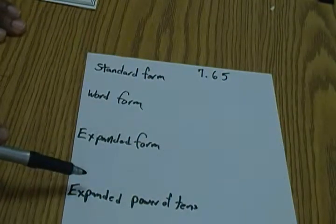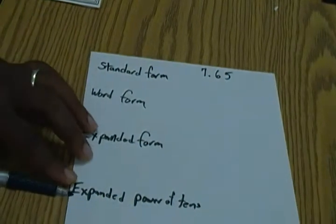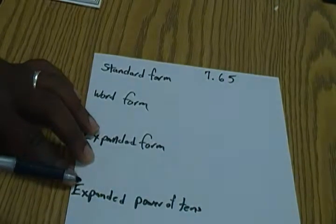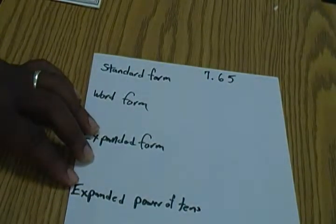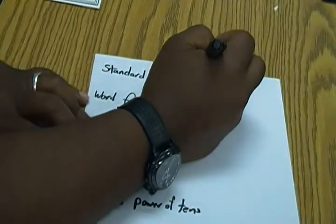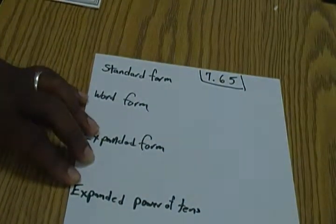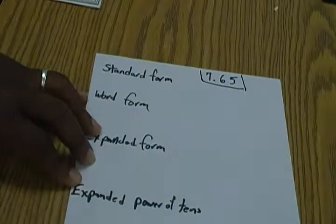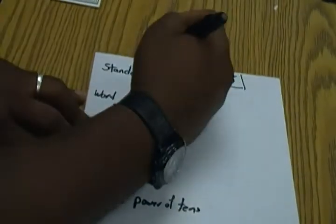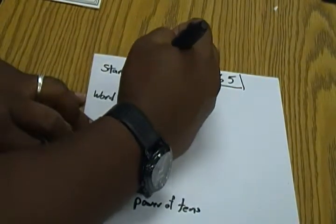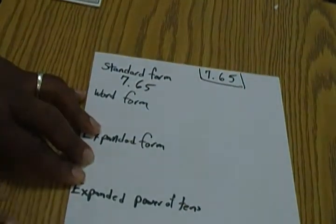Standard form is just your regular numbers. So the one that we're going to use as an example is this one over here. We have 7 and 65 hundredths, so in standard form it would just be 7.65 using your regular digits.